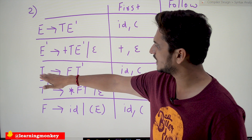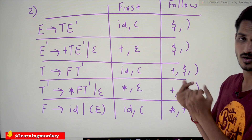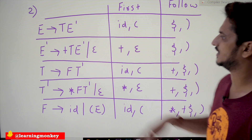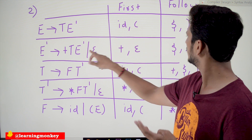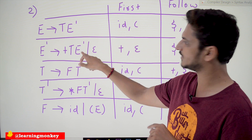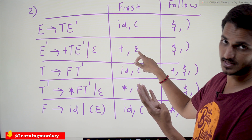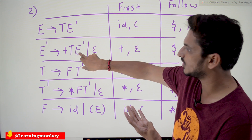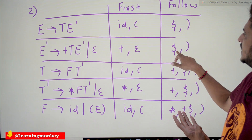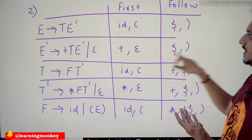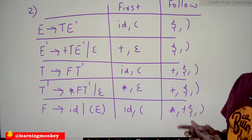Now we calculate FOLLOW of T. On the right-hand side, wherever you see T, calculate from there onwards. FOLLOW of T means FIRST of E-dash. FIRST of E-dash is {+, epsilon}. If you place epsilon in place of E-dash, we get FOLLOW of E-dash. FOLLOW of E-dash is {$, )}. So FOLLOW of T is {+, $, )}.